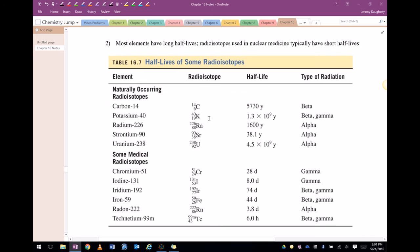So here are some half-lives. You can see carbon-14, 5730 years. Strontium-90 has 38 years. You can see uranium, as I mentioned, four and a half billion years.